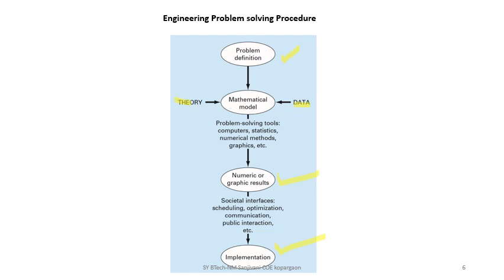You may then optimize these results and communicate them for implementation. In summary: define the problem, build a mathematical model with your theoretical knowledge, test it on raw data, apply a numerical method to solve it, and then interpret the result. These are the major steps of the engineering problem-solving procedure.